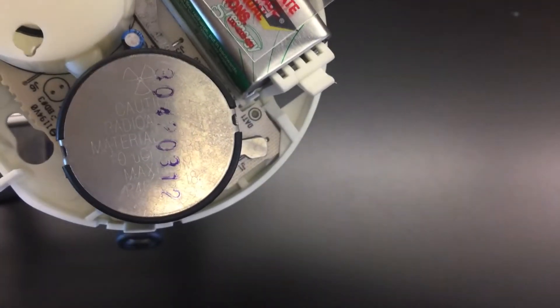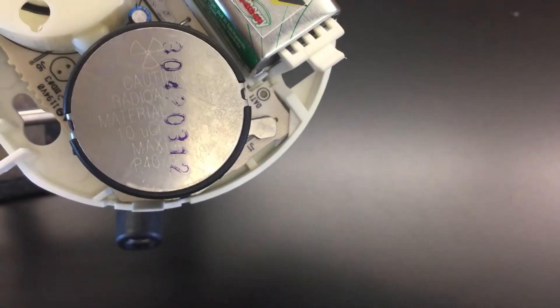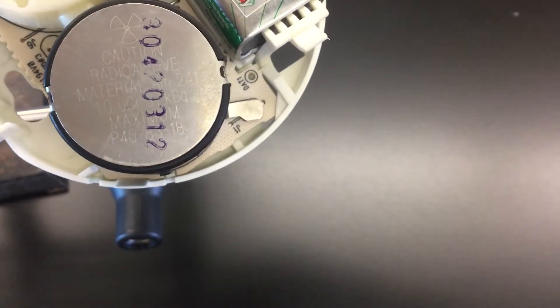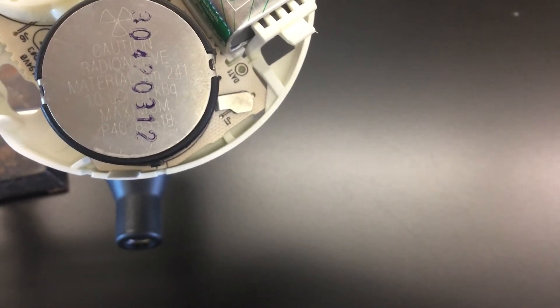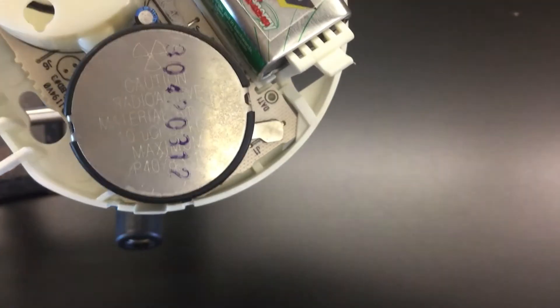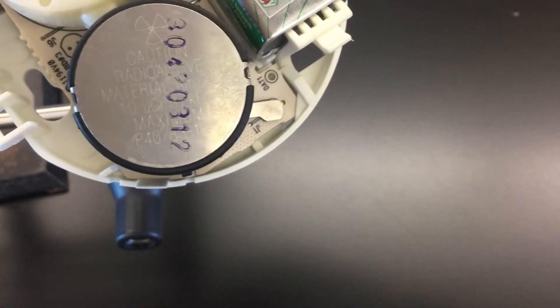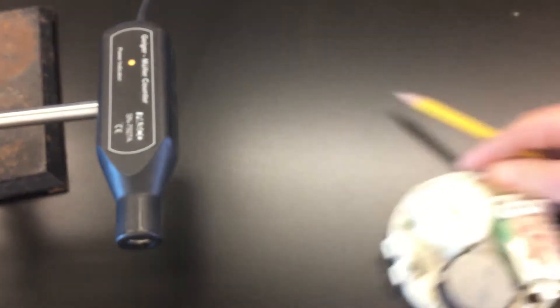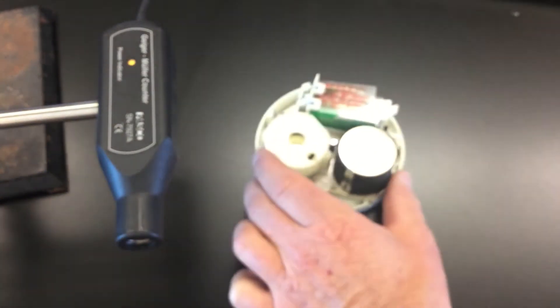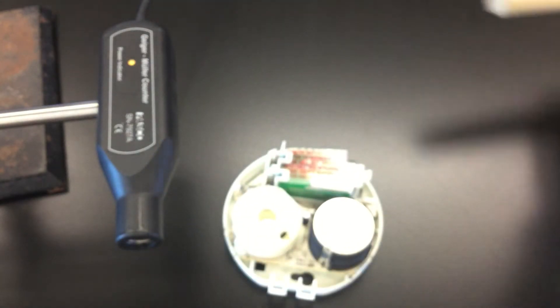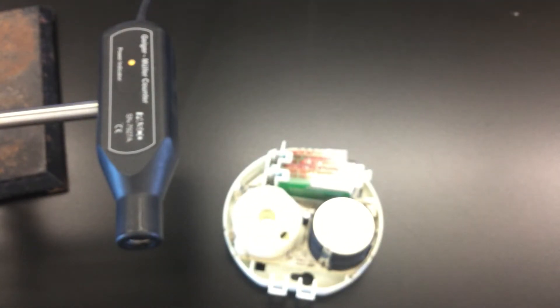It says caution radioactive material 1.0 microcurie maximum. You can see the ionizing radiation symbol at the top there. I've taken this smoke detector from the twin pack.